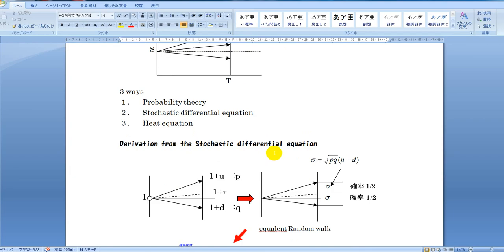There are three ways to derive the Black-Scholes formula: 1. Probability theory, 2. Stochastic differential equation, 3. Heat equation. Let's show each model's essence visually.